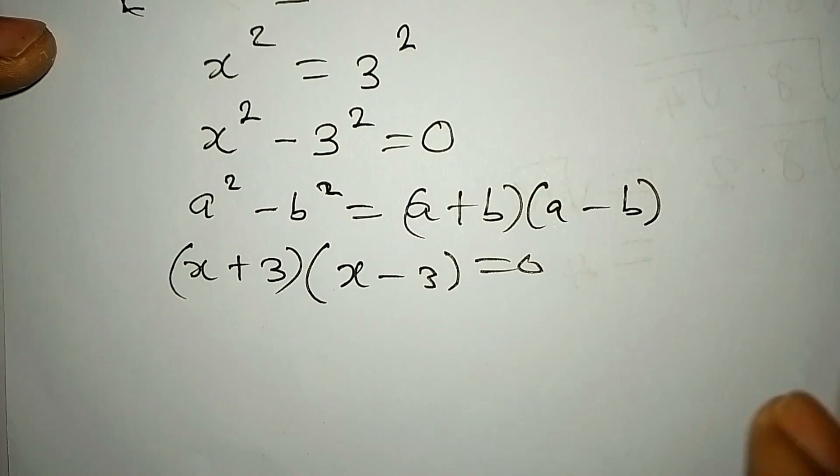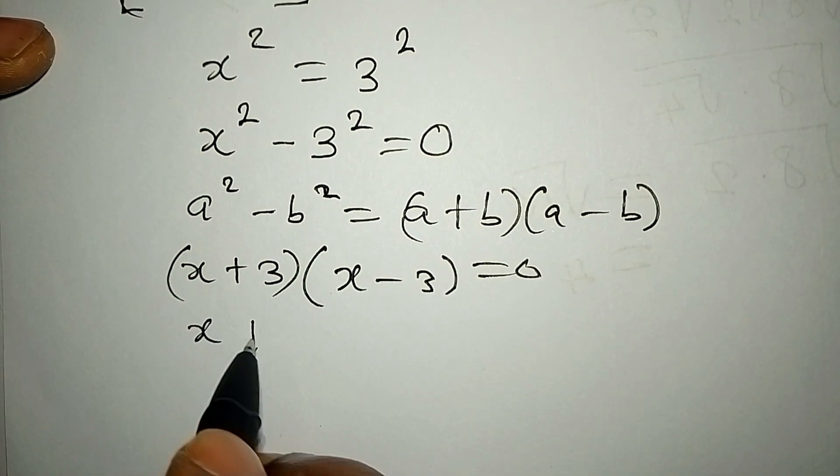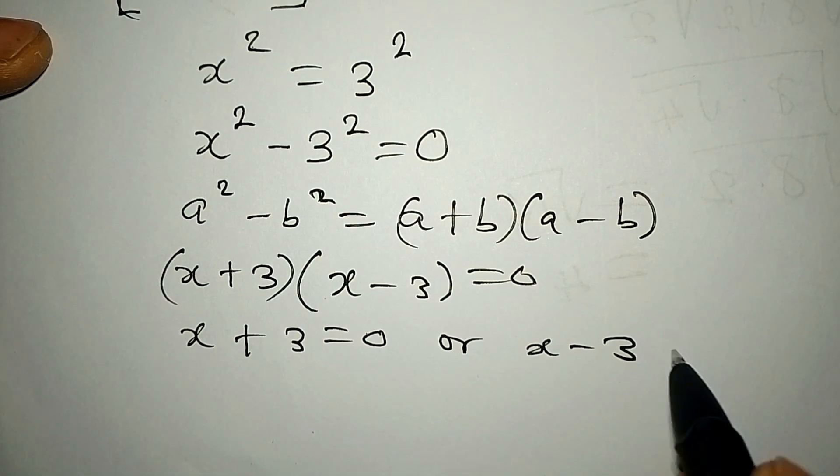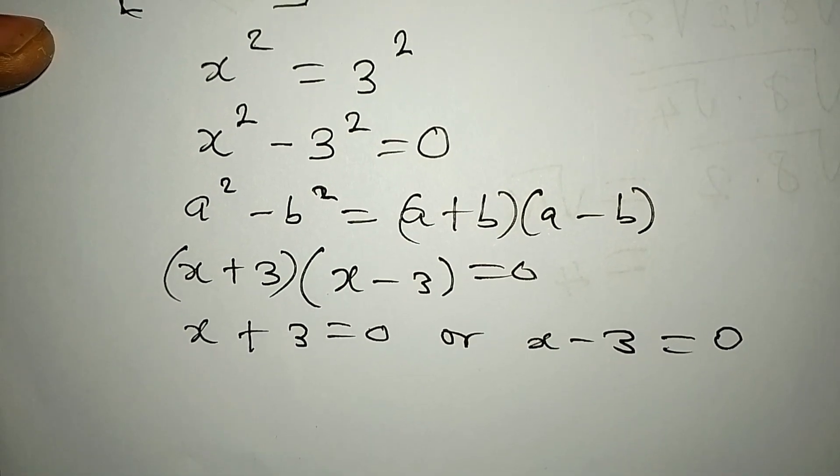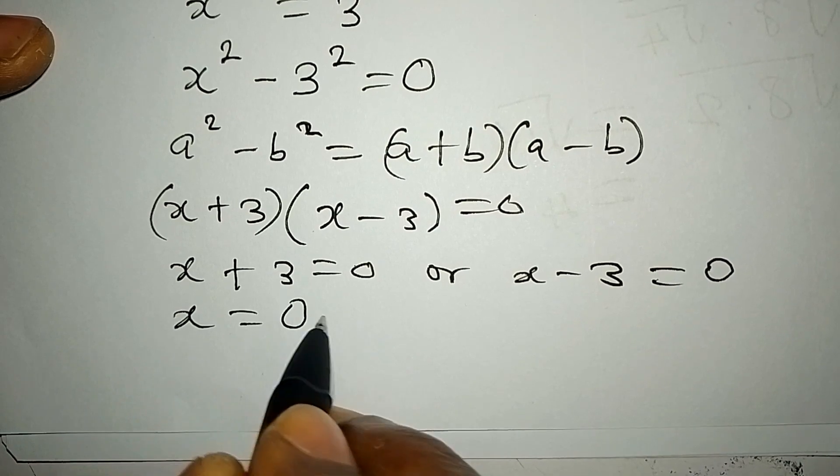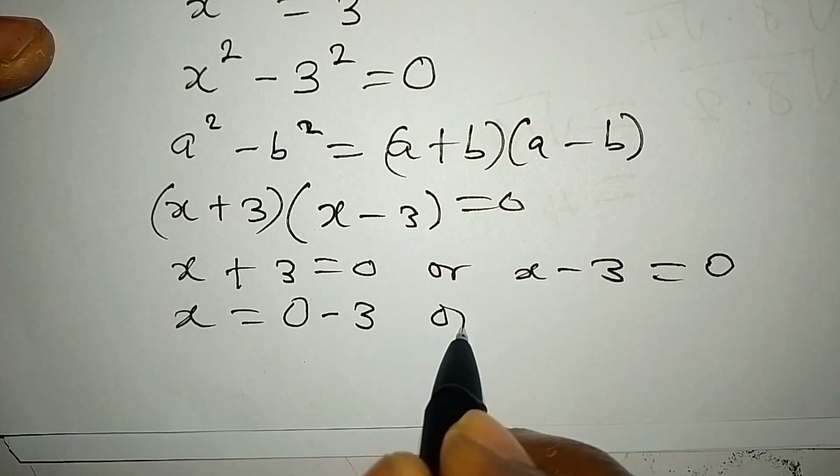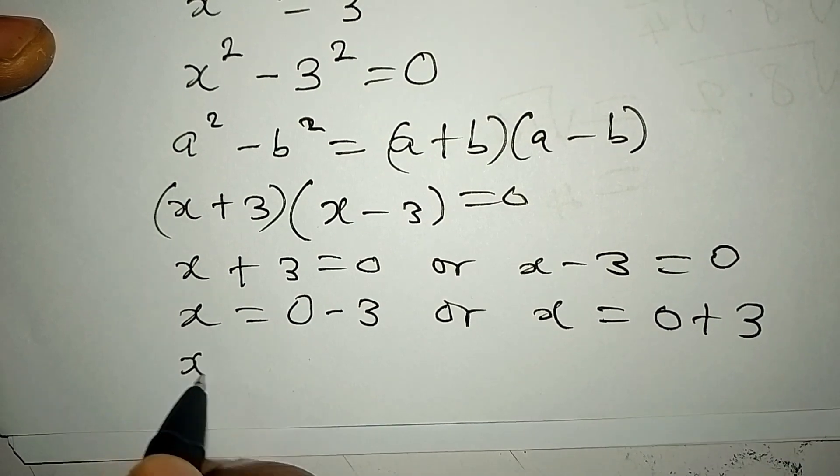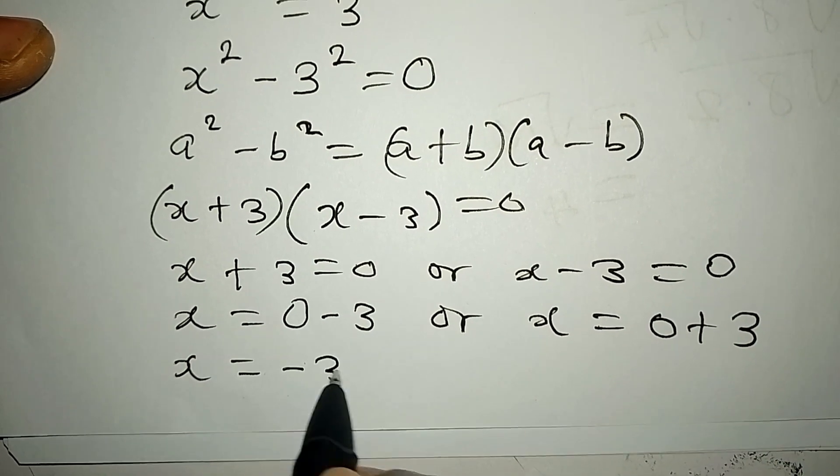Meaning that x plus 3 is equal to zero or x minus 3 is equal to zero. To continue with this, x is equal to zero minus 3, or x equals zero plus 3. Now x from here is equal to minus 3.